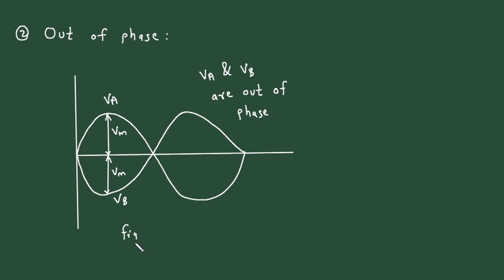If we draw phasor diagram for this, then again we have to take VA as a reference because it is starting from this zero point. Then next we have to draw VB. Now since VB is 180 degrees out of phase, so it will be in this direction. And its phase angle will be phi, which is equal to 180 degrees or we can write pi.